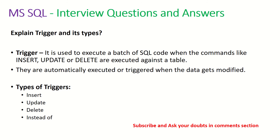Explain triggers and their types. A trigger is used to execute a batch of SQL code when commands like INSERT, UPDATE, DELETE, etc. are run against a table. You can use a trigger after any SQL statement — when you create a trigger, it will automatically execute whenever that data is modified. The types of triggers are: INSERT, UPDATE, DELETE, and INSTEAD OF.